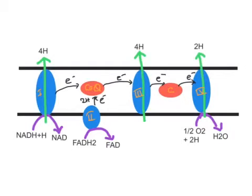Hello everyone, Dr. Mungle here. In this video I will be explaining something which is generally not taught by most professors when they teach electron transport chain. I'll be explaining the very fundamental basis of electron transport chain — why electron transfer goes from Complex 1 to Complex 4, why NADH+H+ enters into Complex 1, why oxygen is the final electron acceptor, and why there is pumping of protons from Complex 1, Complex 3, and Complex 4.